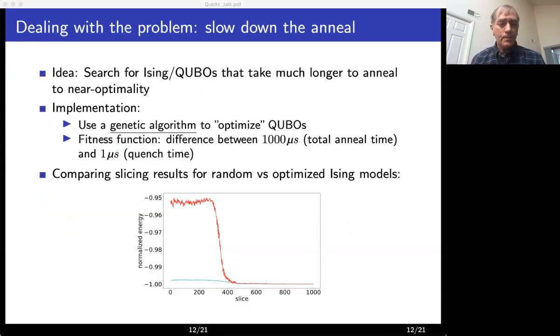So how can we mitigate this issue? The idea is that since we are not allowed to decrease the time of the quench, we could possibly slow down the annealing, meaning to choose Ising or Qubo problems for which annealing takes much longer than one microsecond to produce some good high quality solutions. How do we find such Qubo or Ising problems that take longer to anneal? We use again a genetic algorithm whose fitness function is the energy difference between a one microsecond anneal and 1000 microsecond anneal, so to produce problems with desired properties.